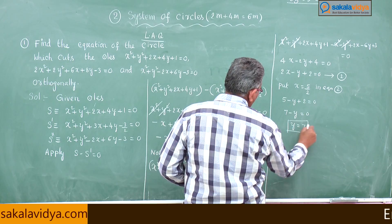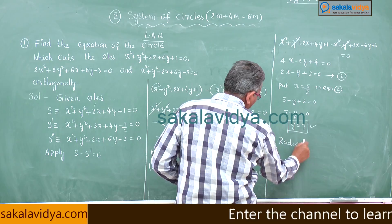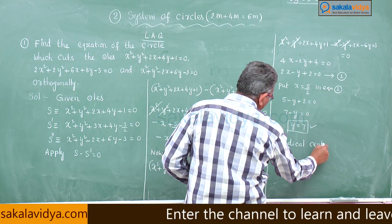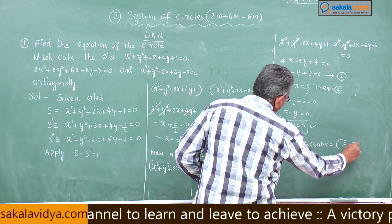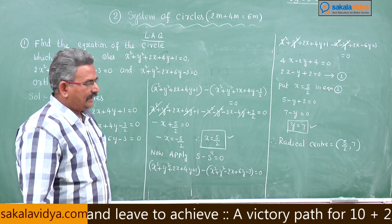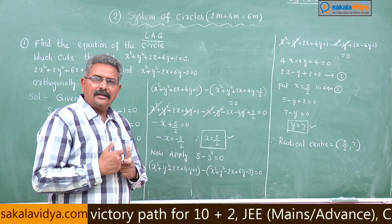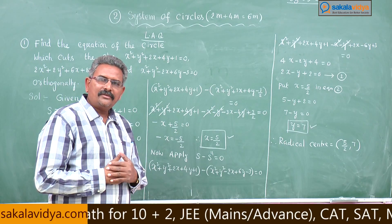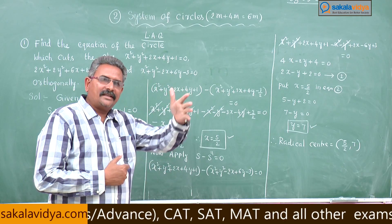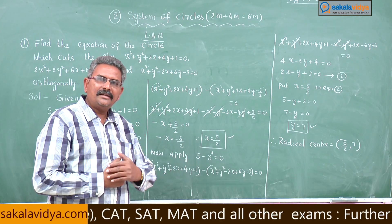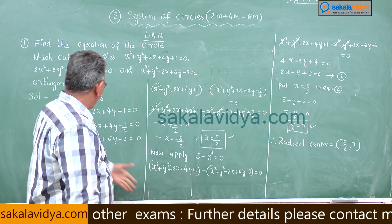Therefore the radical center is (5/2, 7). Up to this step we have found the radical center, but the problem is not complete. One more step remains: we have to find the radius of the required circle, which is the length of the tangent drawn from (5/2, 7) to any one of the circles.